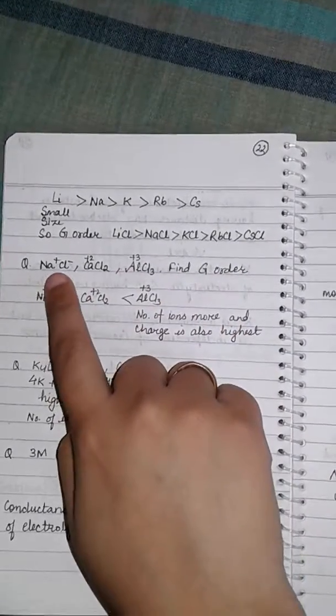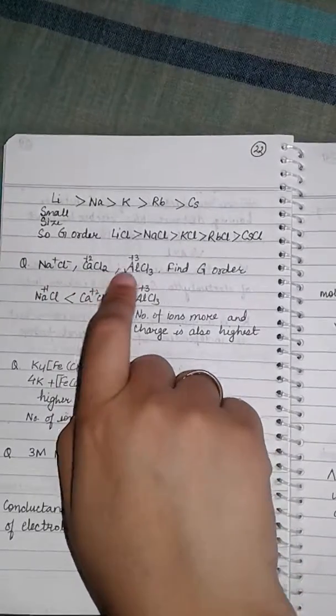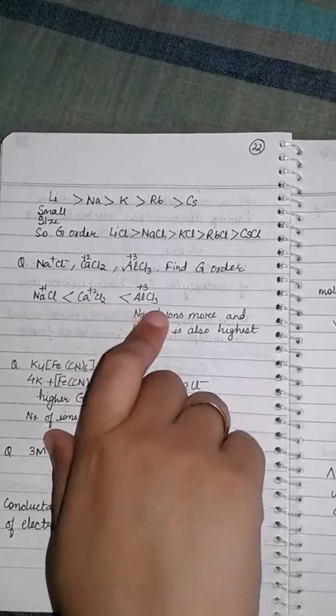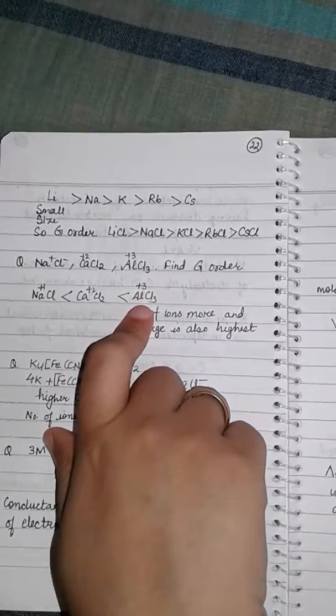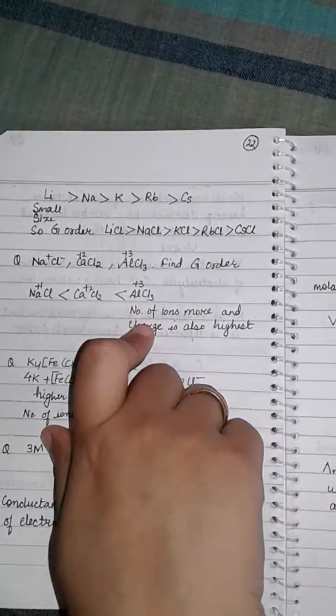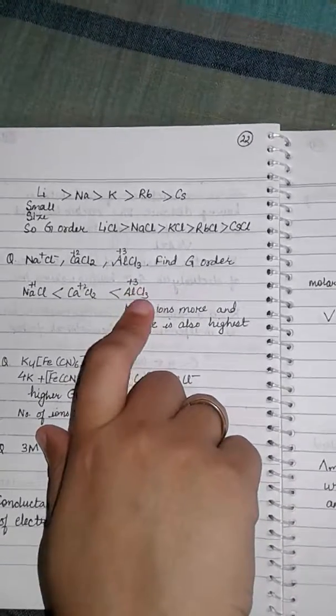In the next question, find the conductance order of these ions: NaCl, CaCl2, and AlCl3. Since the charge on the AlCl3 is higher, that is plus three, and the number of ions are also high for this, so it has the maximum conductance. Minimum conductance is of sodium chloride.